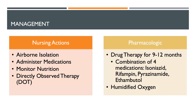Nursing actions for somebody who has developed TB include airborne isolation, administration of medications, monitoring their nutrition, and direct observed therapy. Direct observed therapy is used if the patient is treating the infection at home, where a nurse would come out to make sure they're taking their medications properly.